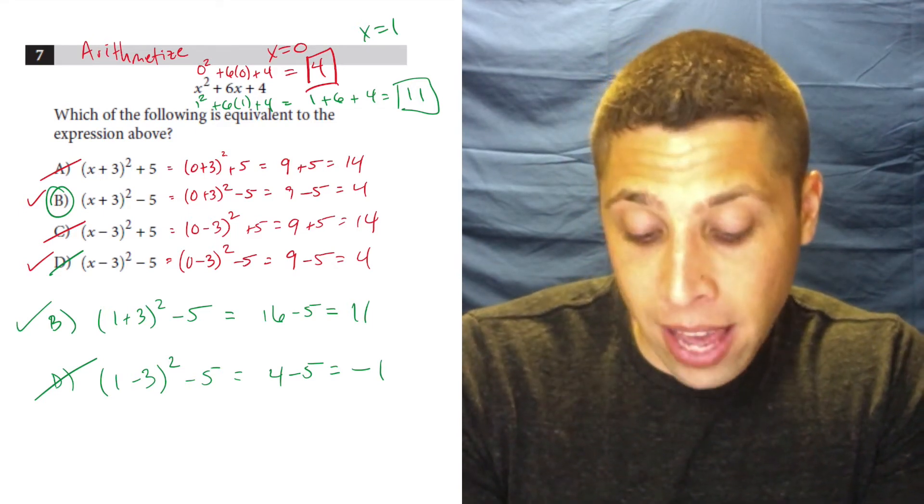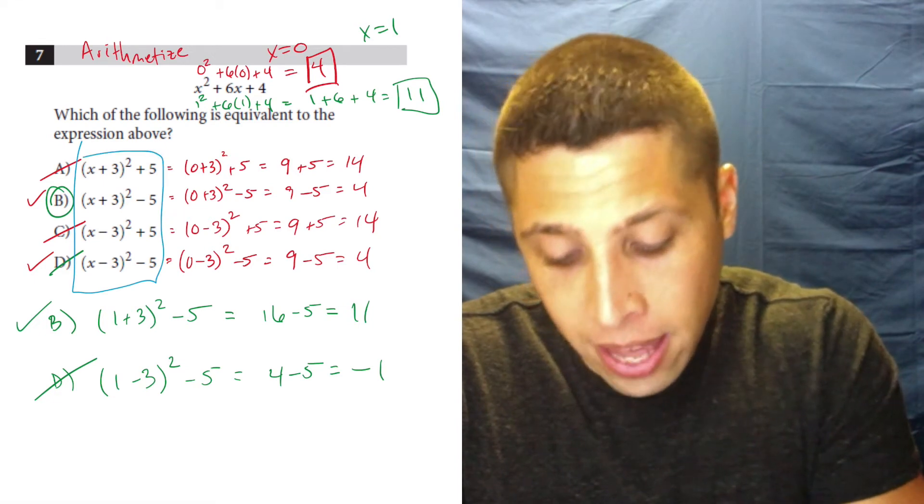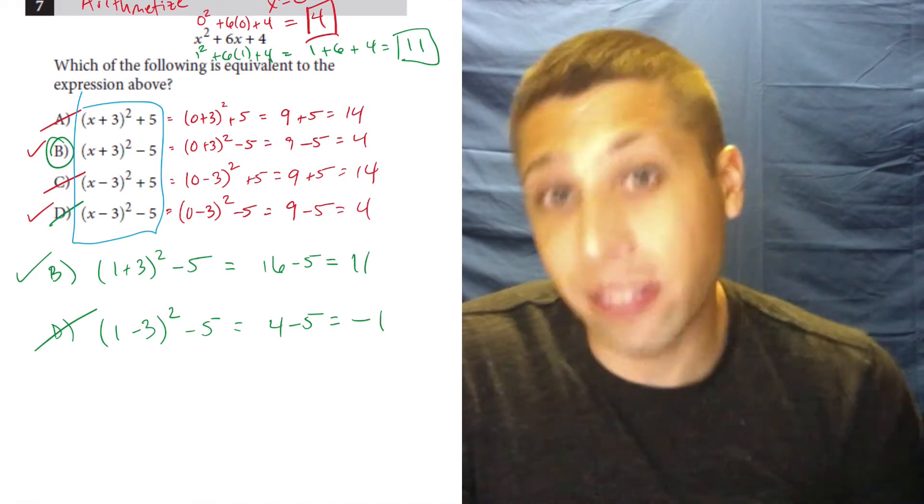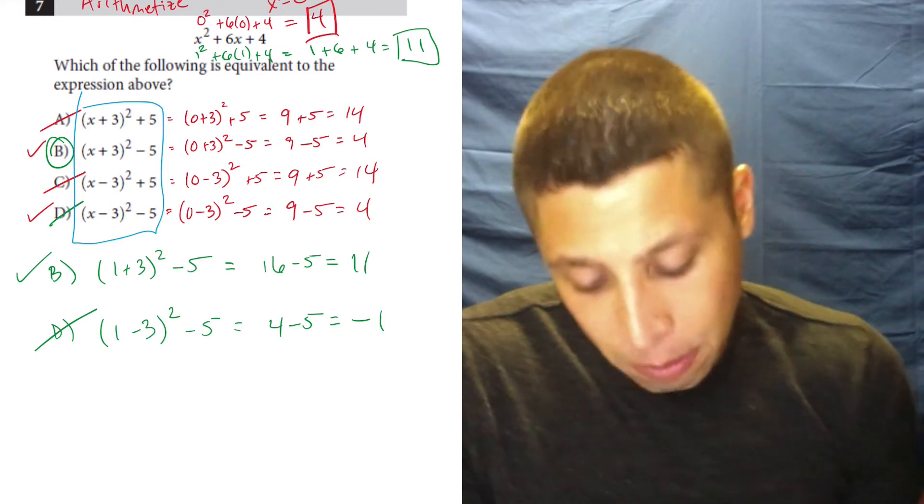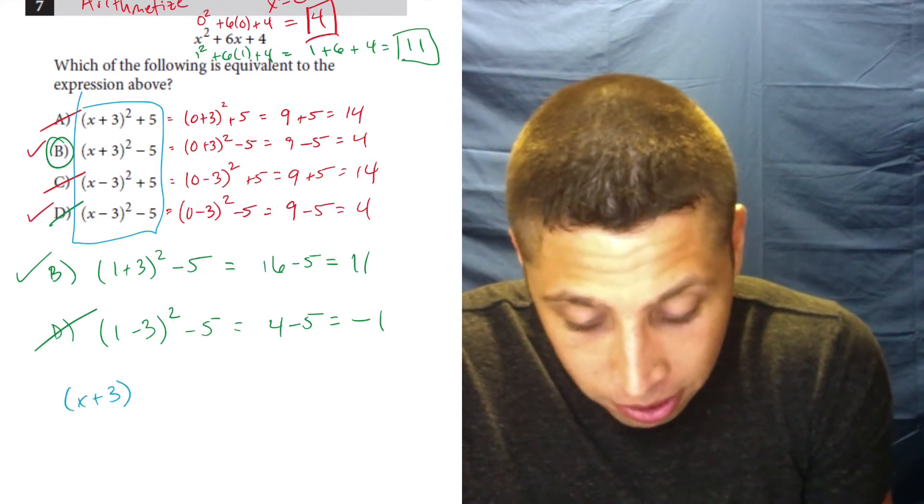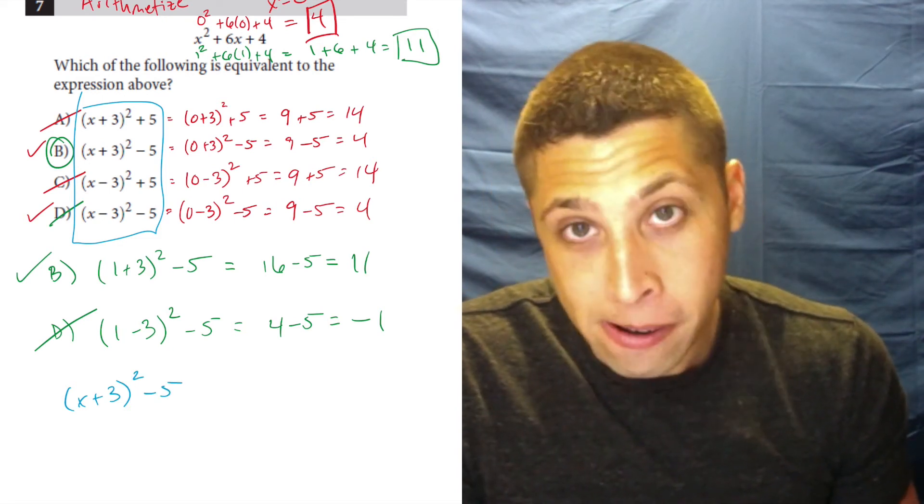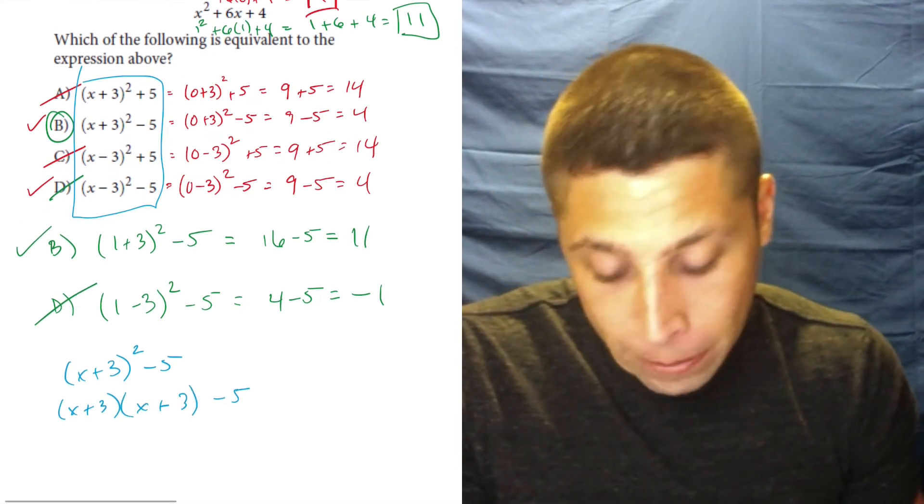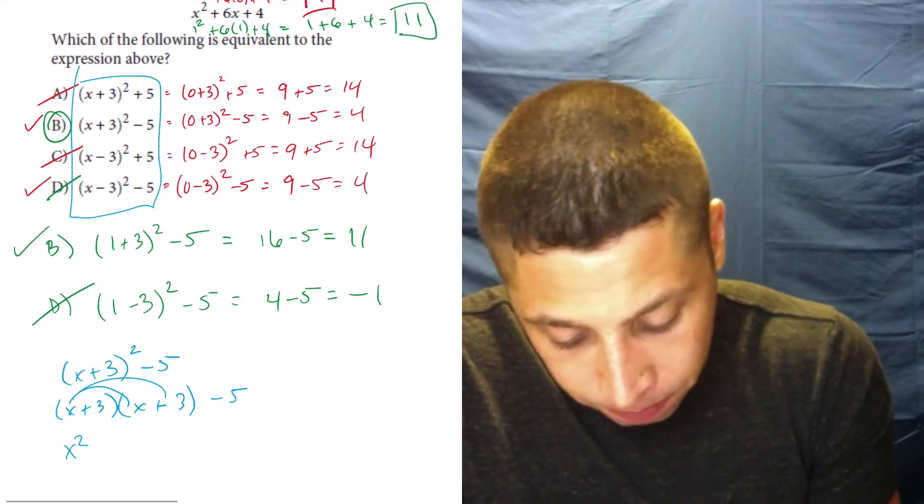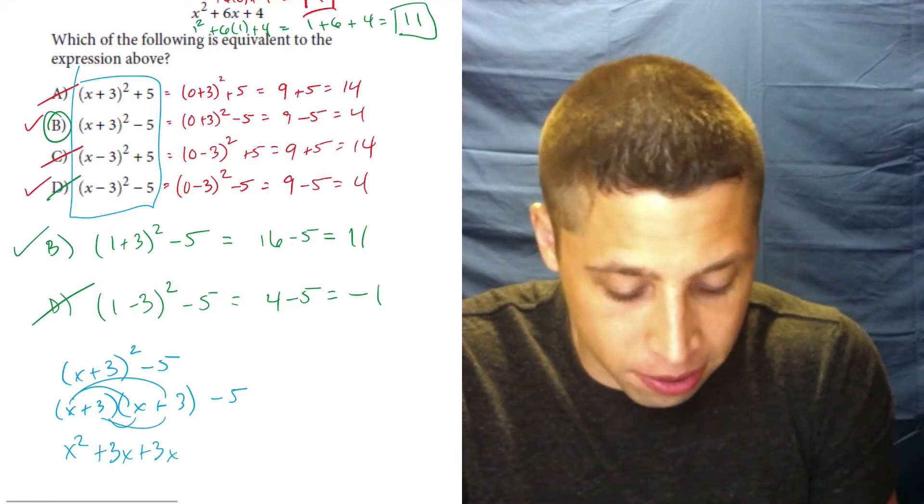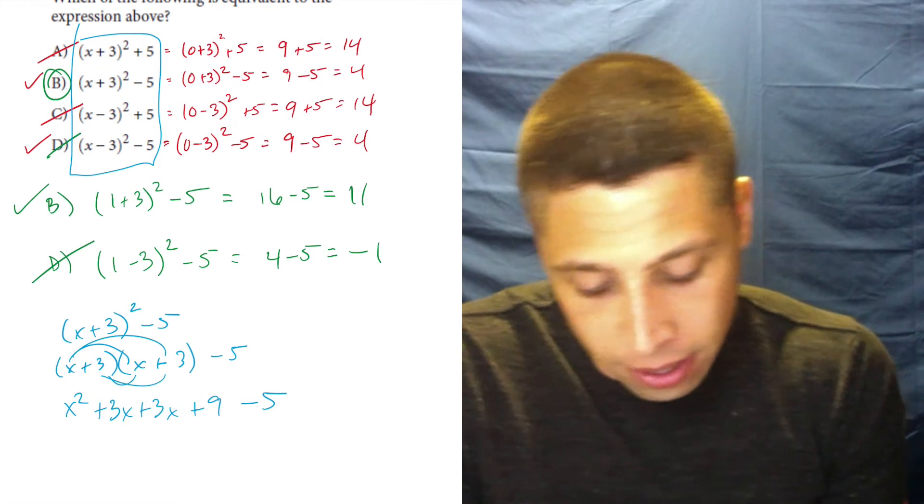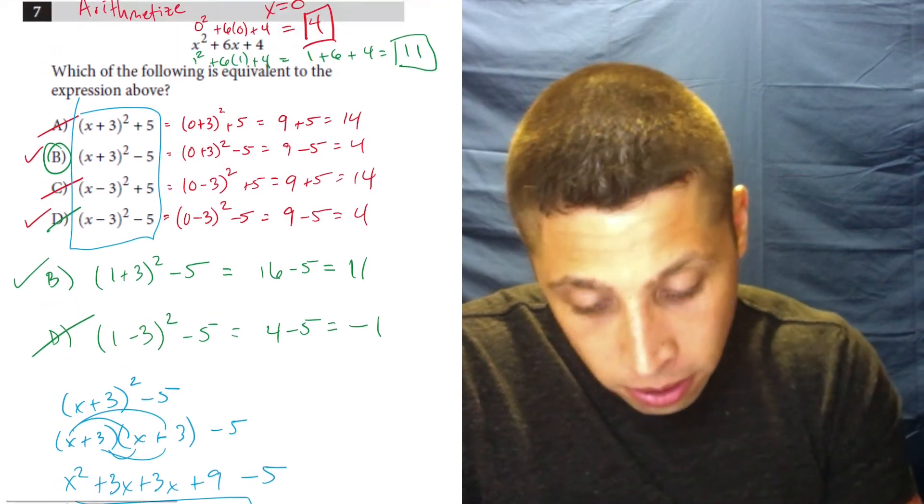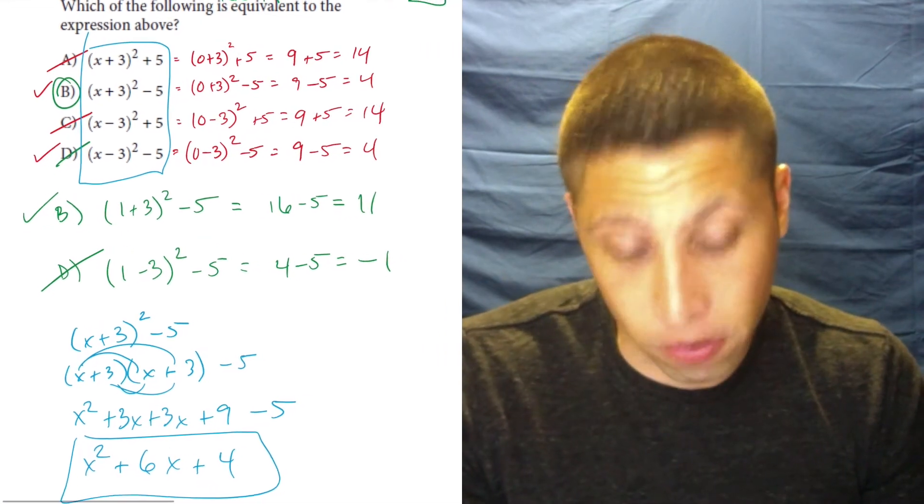Now, the other way that people do it is they take these answer choices and they factor, or sorry, they foil out the parentheses part and then they see if it matches with the start. So let me just show you. So if I were to do that with our correct answer, we would have x plus three squared minus five. Hopefully, we know how to foil correctly, and that means we actually have to write out x plus three times x plus three. That's going to be x squared plus three x plus three x plus nine minus five. Can't forget that. So combine like terms, x squared plus six x plus four, which is what we have, x squared plus six x plus four. So fine. That also works.